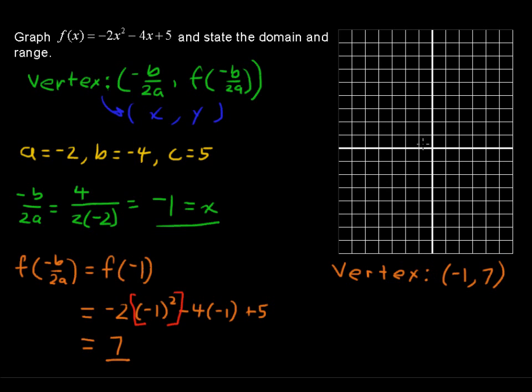Let's put that there, let's plot that point. -1, and then up 7 places, 2, 3, 4, 5, 6, 7. This is our vertex.